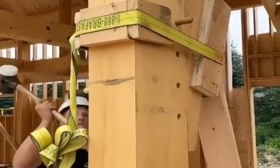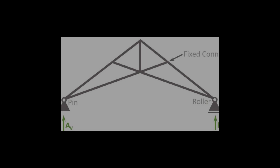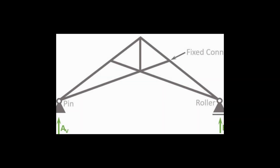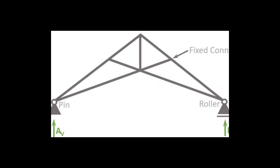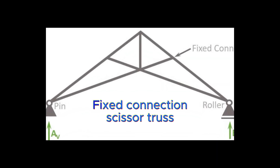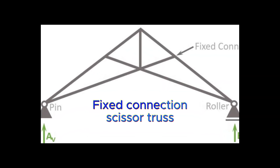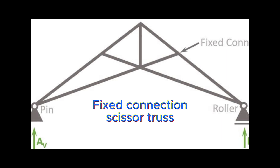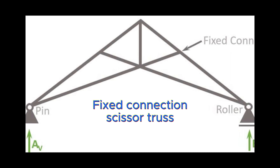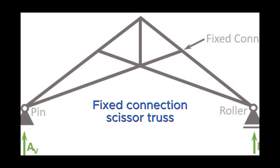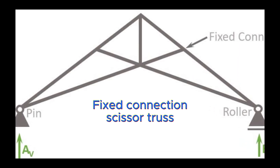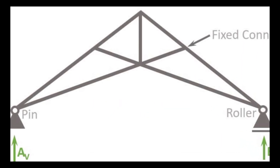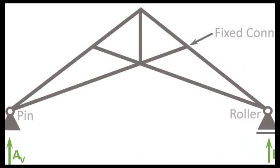The scissors truss with fixed connections has the following differences compared to hinge connections: bending moments in the connections, more rigidity, more robustness, and smaller vertical deflection.